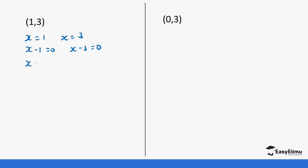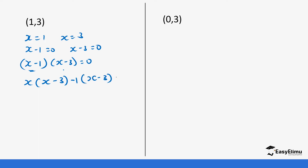So (x minus 1) times (x minus 3) equals 0. We expand: x into bracket (x minus 3), then minus 1 into bracket (x minus 3), equals 0. This gives us x squared minus 3x minus x plus 3, so x squared minus 4x plus 3 equals 0.